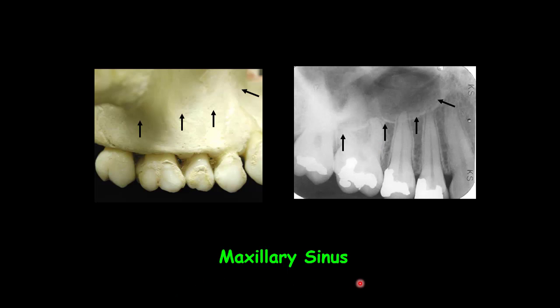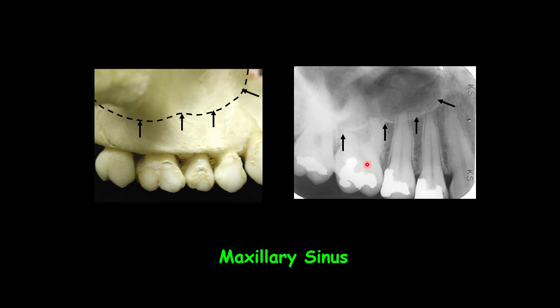The maxillary sinus is one of the paired sinuses inside the body of the maxilla. In adults, the sinus floor usually extends from the distal of the canine to the posterior wall of the maxilla. On periapical radiographs, we see the inferior border of the maxillary sinus as a thin layer of cortical bone.